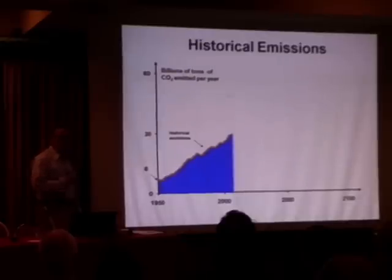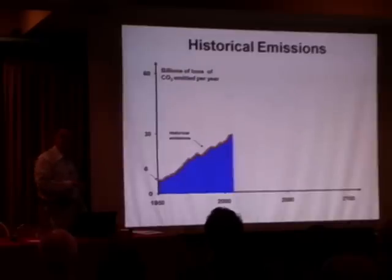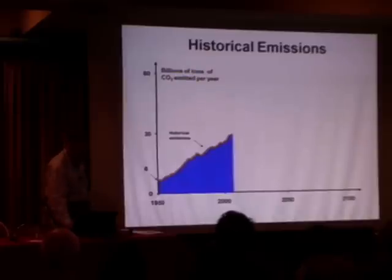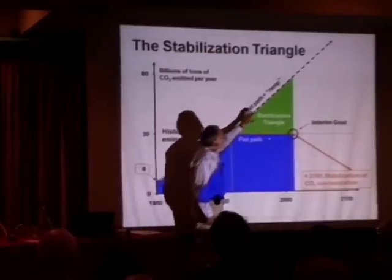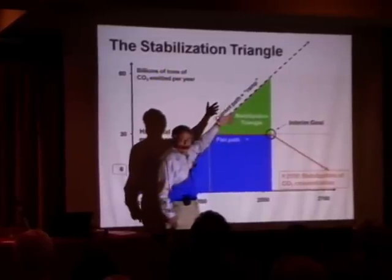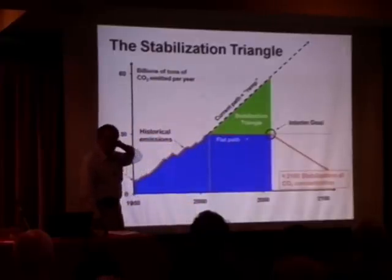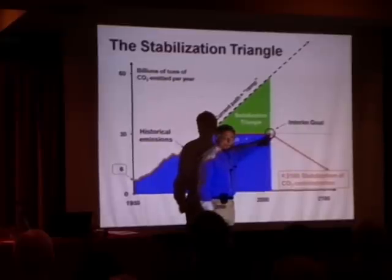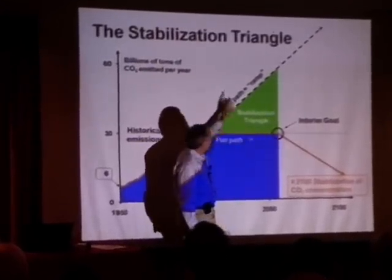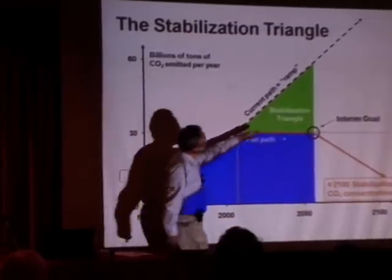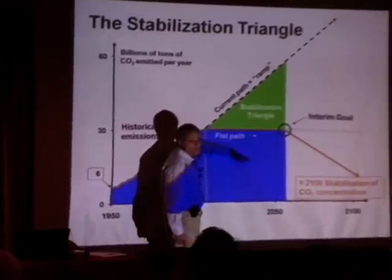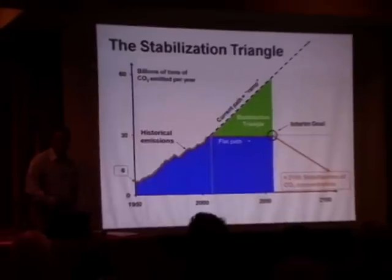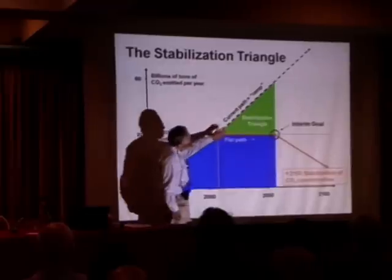We came up with a very simple picture. We said: if we do nothing, emissions will approximately double — many thousands of papers in the literature average out to something like doubling today's global emissions. And we could have a party if we don't climb at all over 50 years. After we wrote the paper, some said it would be worse; others said the flat line isn't good enough. We just drew those two lines, and the space in between is the work we have to do.